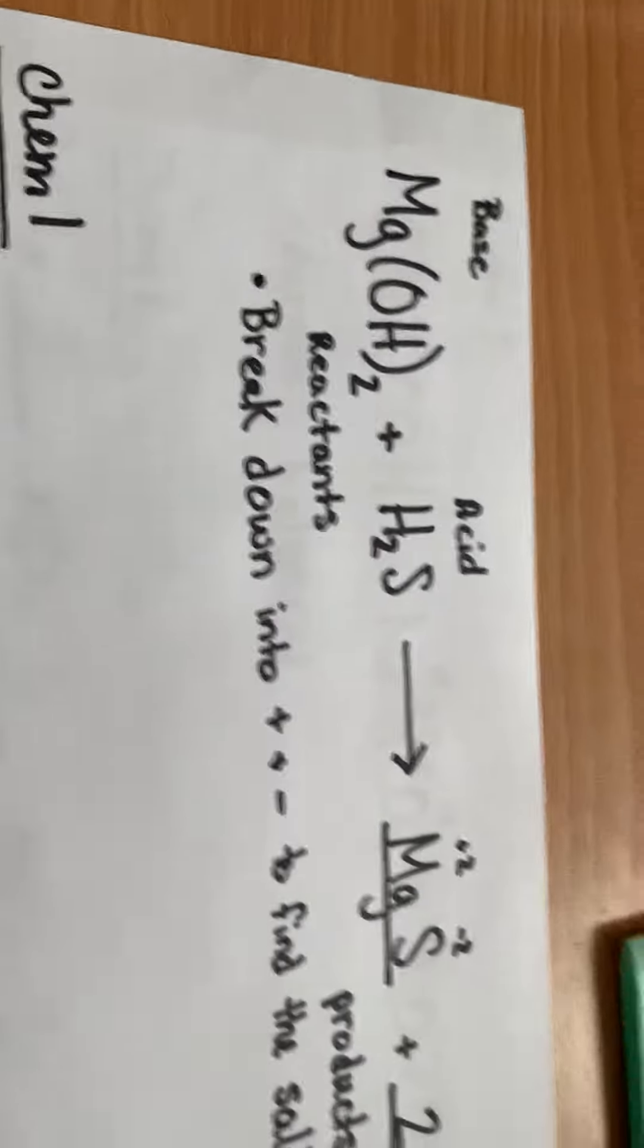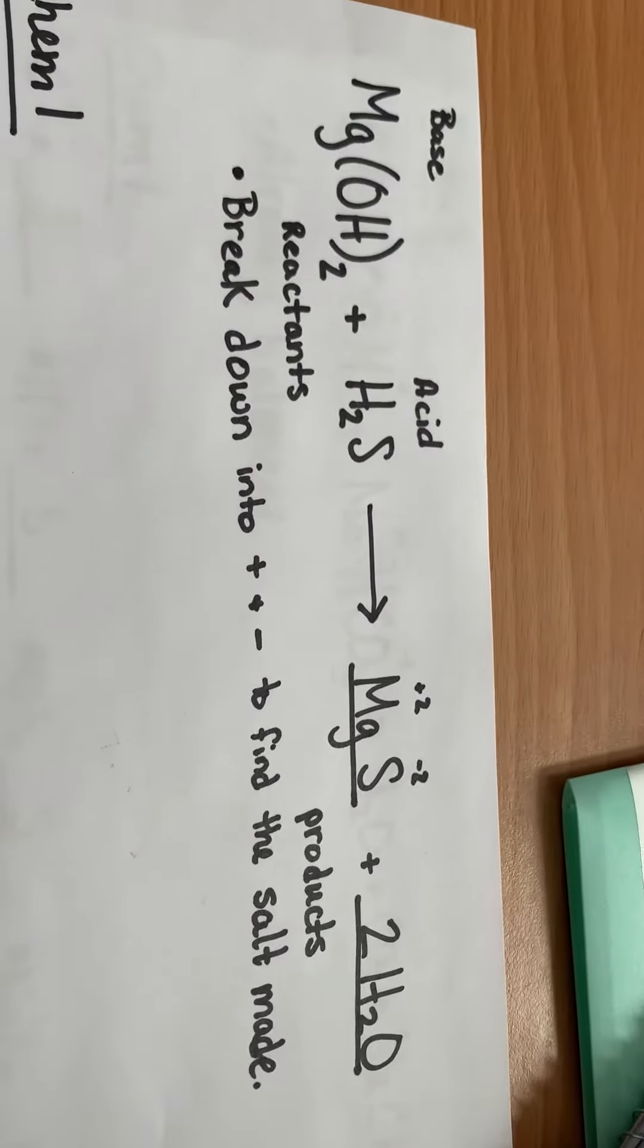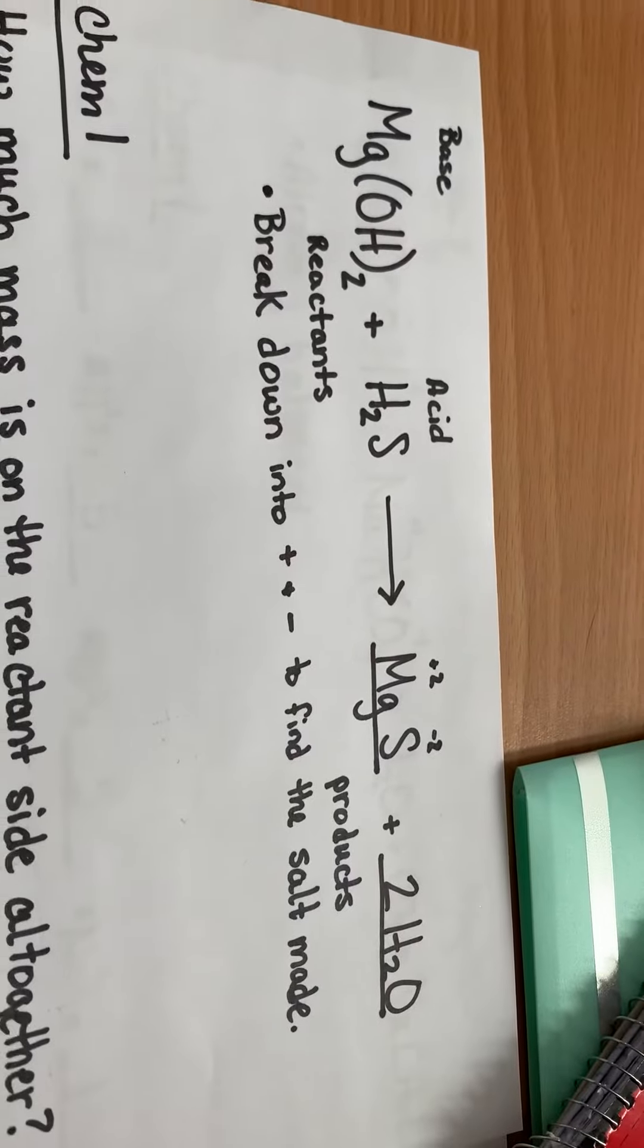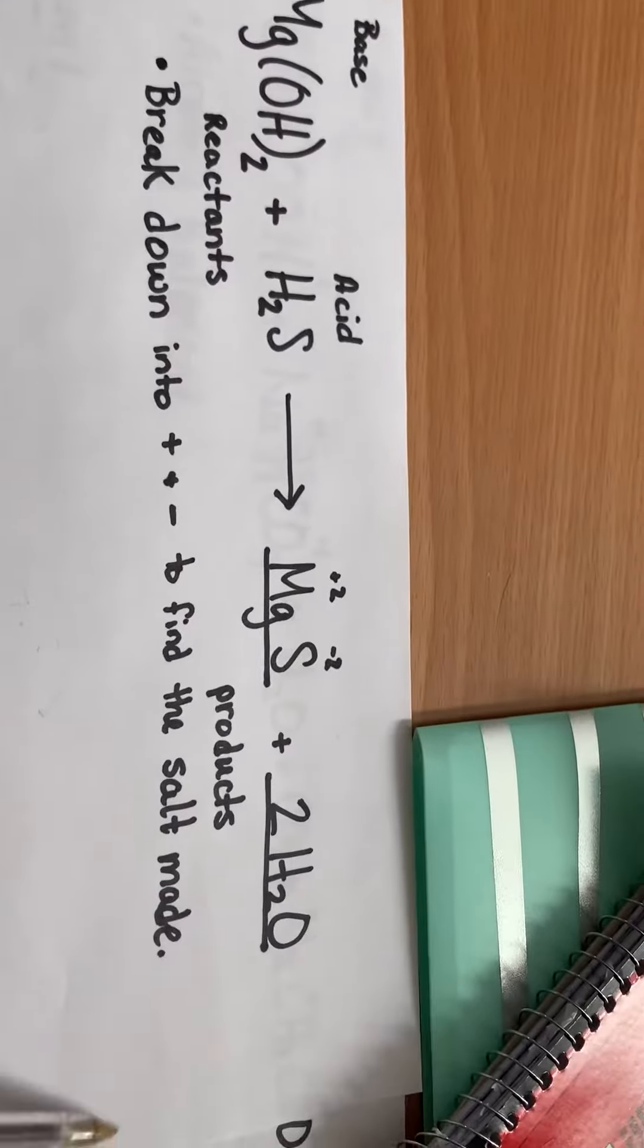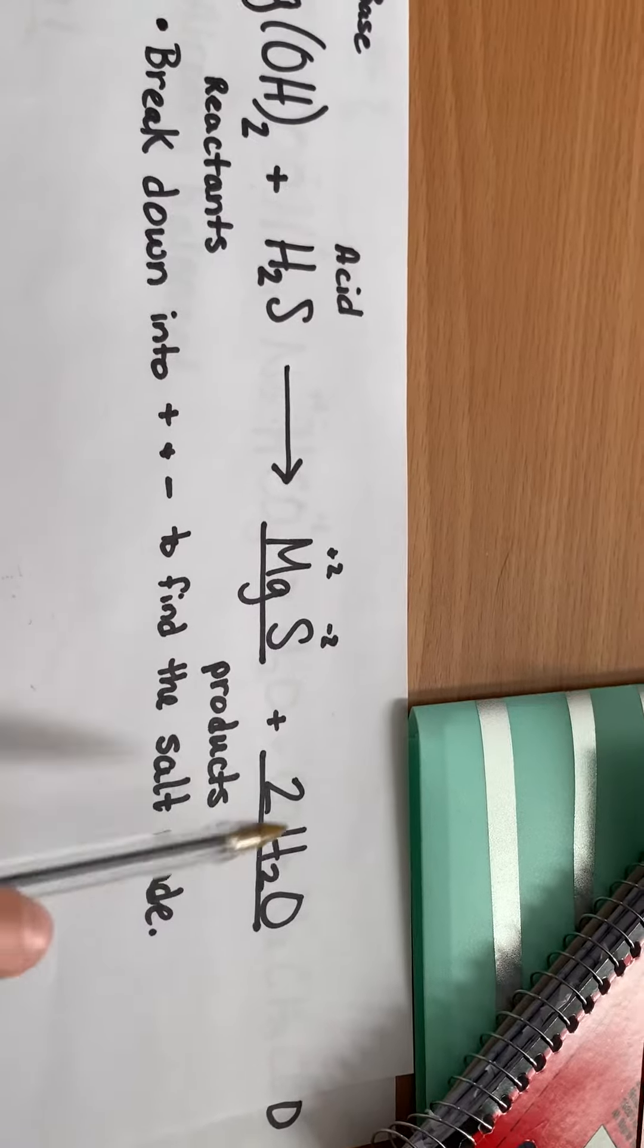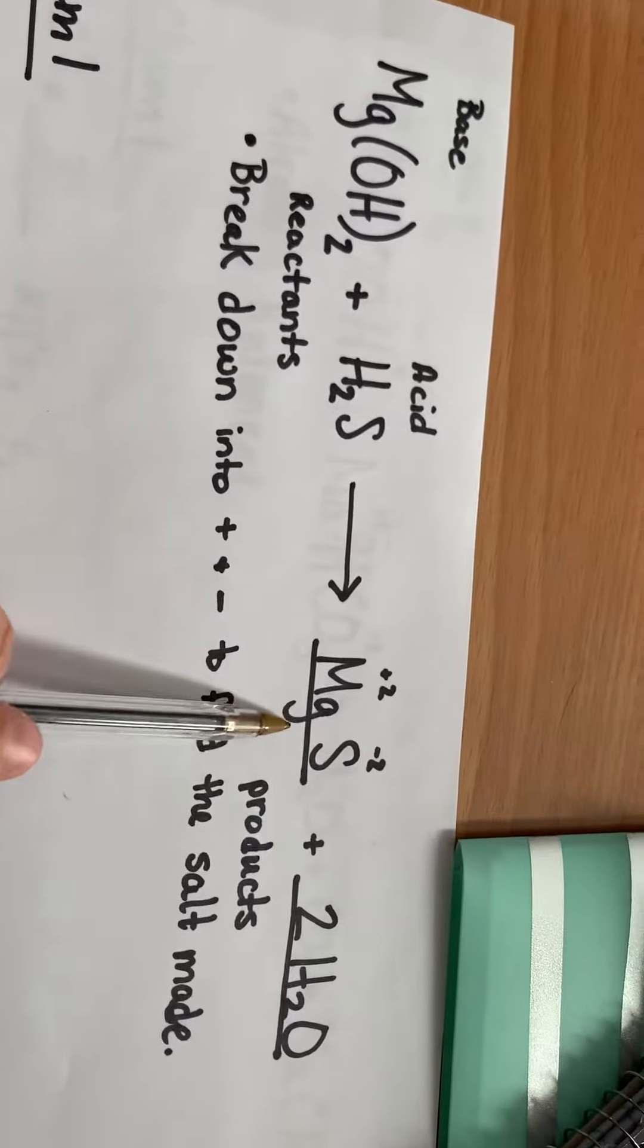Okay, so I asked Chemistry 2 to tell me what the products of this question would be. If I have an acid and a base, I'm always going to make water, H2O, but I'm also going to make a salt. And in this case, it is MgS.